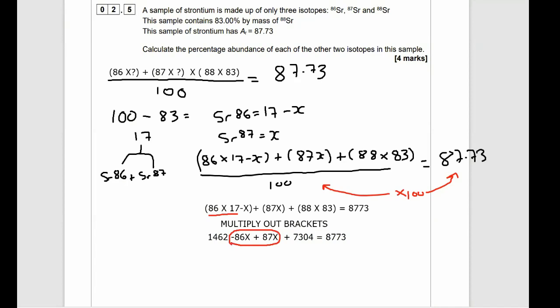Obviously, let's get rid of this minus 86X and plus 87X. And that will just give us 1X. Write this out. And now we might as well add together these two numbers on the left hand side into one big number. And if we add 7,304 to 1,462, whack that in the calculator, we get 8,766 plus 1X equals 8,773.